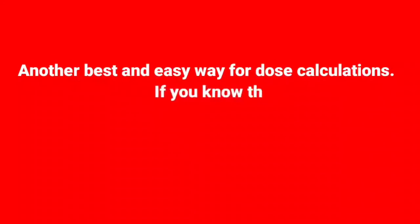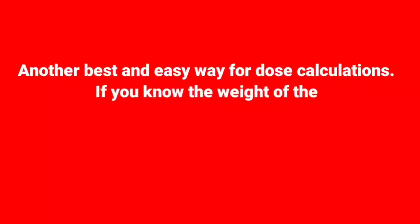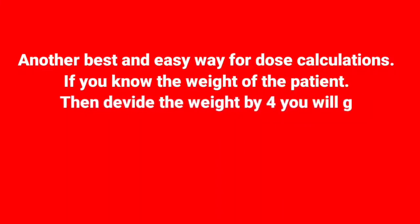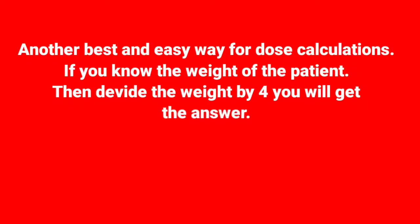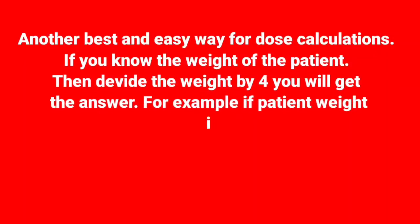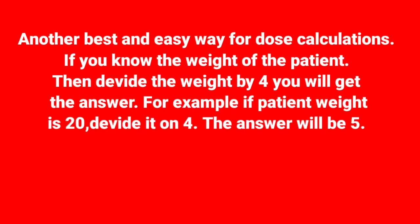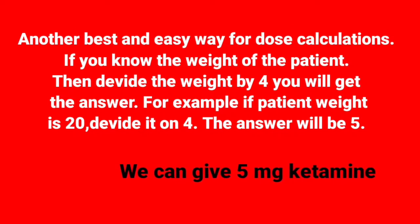Another easy way for dose calculations: if you know the weight of the patient, divide the weight by 4 and you will get the answer. For example, if the patient weight is 20, divide it by 4 — the answer will be 5. Simply, we can give 5 mg ketamine.